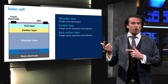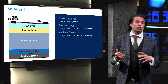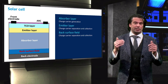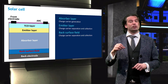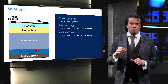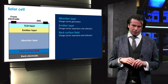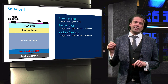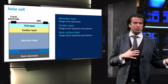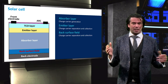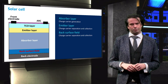Similarly, at the back of the solar cell we have the back surface field, or BSF. This acts as a semi-permeable membrane for majority charge carriers — in this case holes. With the BSF and the emitter, we can separate electrons and holes to either side of the solar cell.